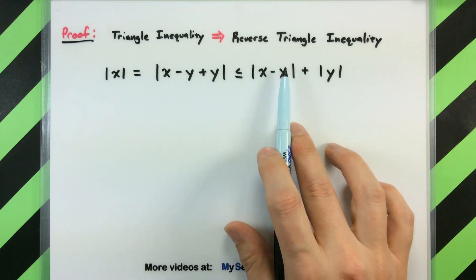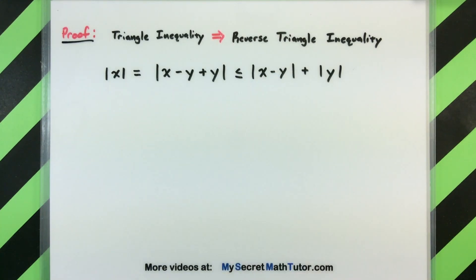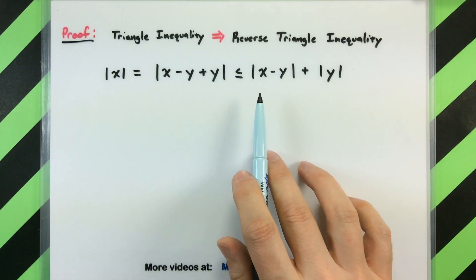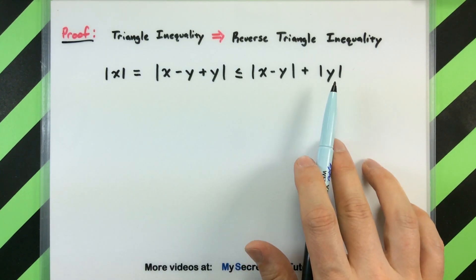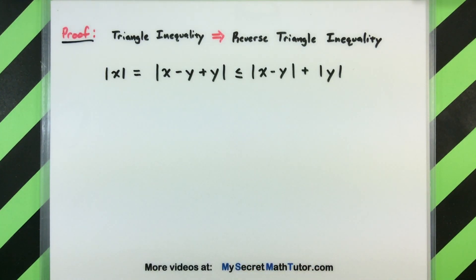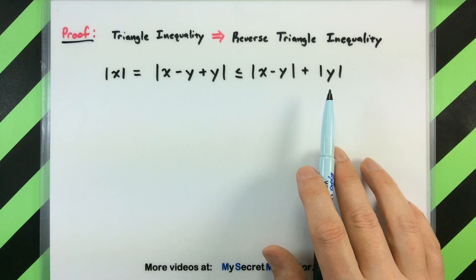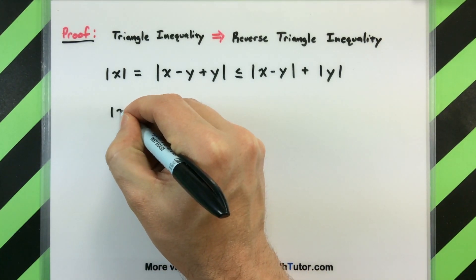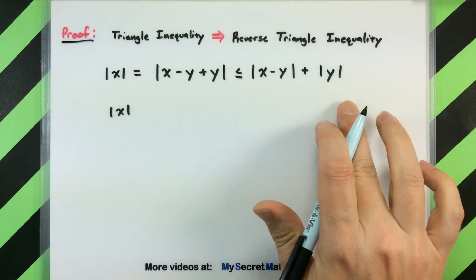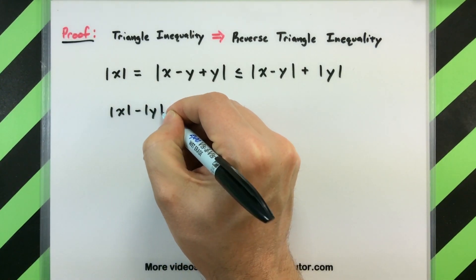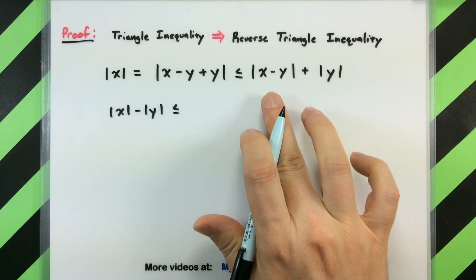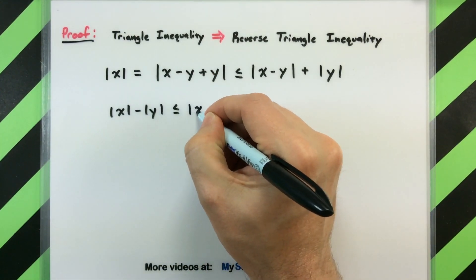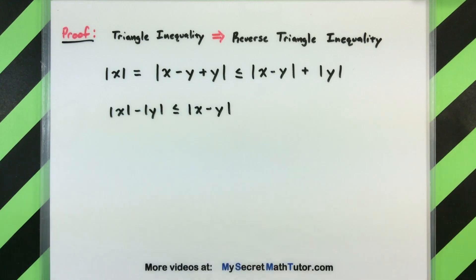Over here on the right side, we're sneaking in a little bit of that reverse triangle inequality — you can see the expression we want. But it's got this y that we don't want on that side, so we're going to subtract y back over with the x. That gives us the absolute value of x minus the absolute value of y is less than or equal to the absolute value of x minus y. This is half of our reverse triangle inequality.